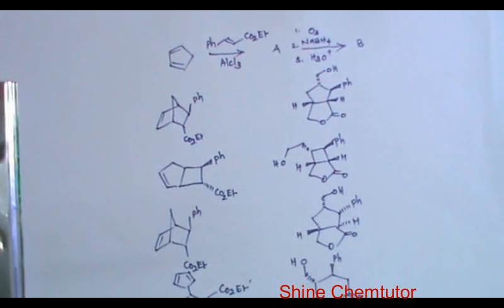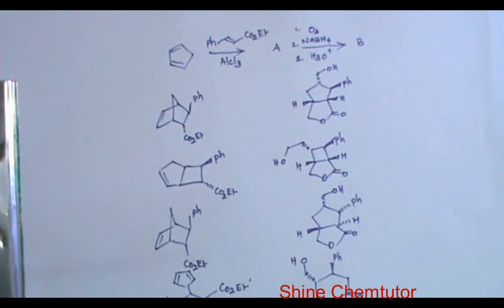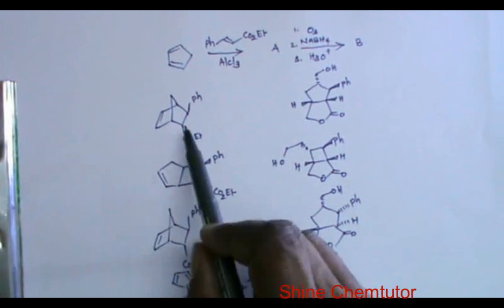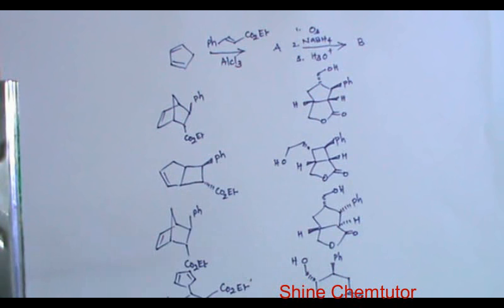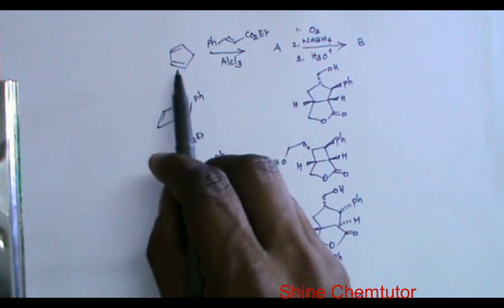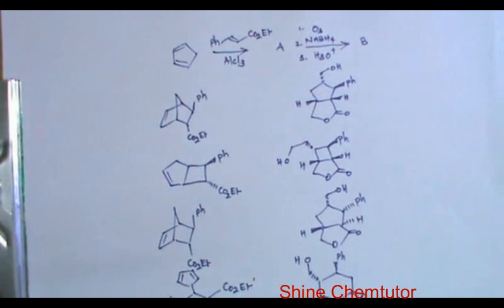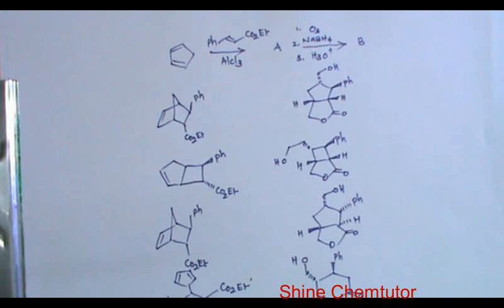The given options are here. For compound A, they are given 4+2 cycloaddition products — these two are basically 4+2 cycloaddition products. Also, they are given a 2+2 cycloaddition product. This one can be obtained if this compound undergoes 2+2 cycloaddition. The next one is a Michael addition product.